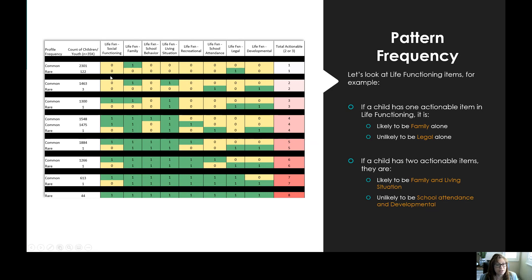Similarly, looking at those with two actionable items, the most popular pattern is family and living situation, while the least popular pattern is school and developmental alone without some of these other areas. This would be considered an unlikely pattern in the data.